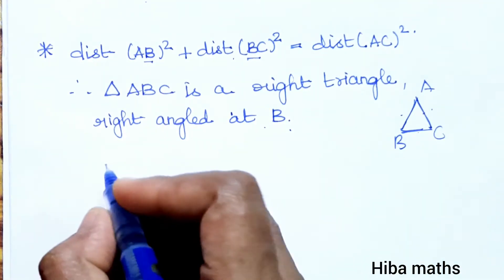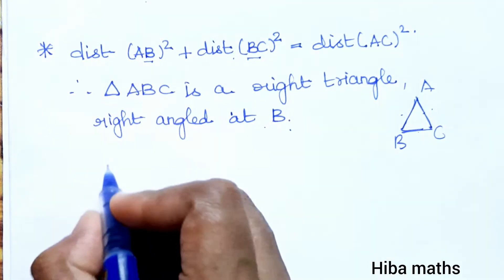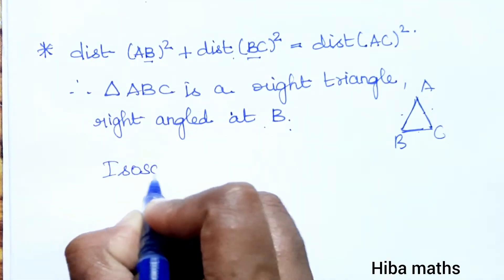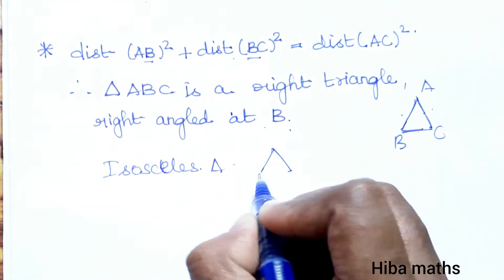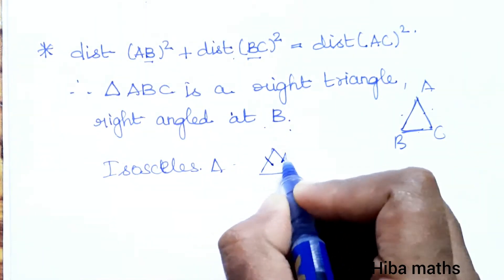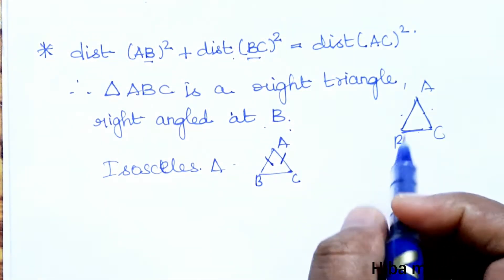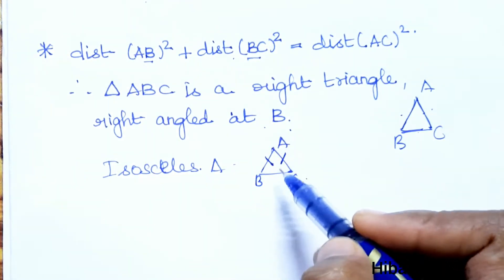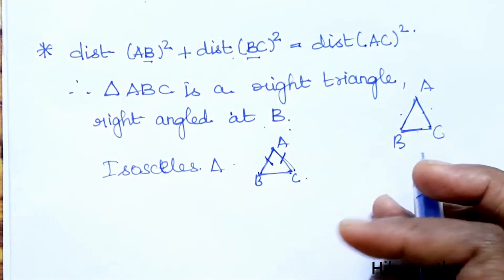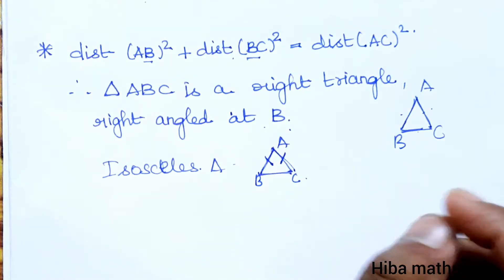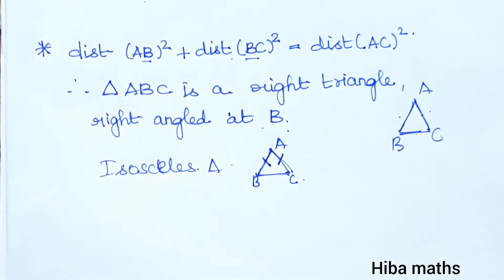If AB equals BC, it is an isosceles triangle. In a question about an isosceles triangle, there is a triangle ABC and we find the AB value, BC value, and AC value. If two sides are equal, it is an isosceles triangle.